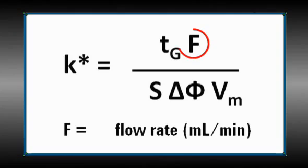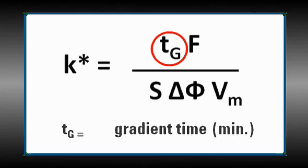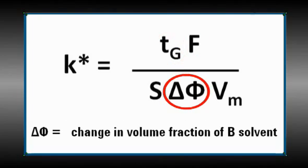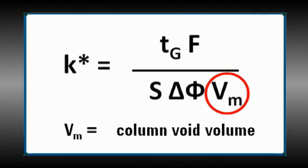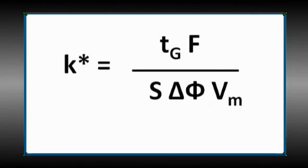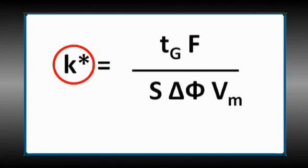You see flow rate, gradient time, gradient range, and column volume. It's important to remember that changes in the denominator need to be offset by changes in the numerator and vice versa. Our retention factor K, or K-star in a gradient, is a simple way to increase resolution. However, this can be at the expense of a longer runtime. In addition, peak width increases and peak height is reduced, which can make quantitation more difficult.